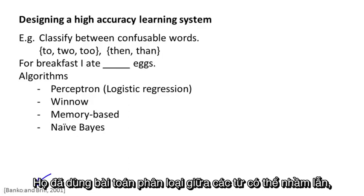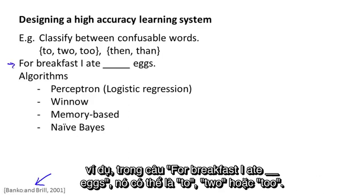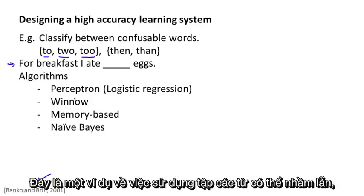They were considering the problem of classifying between confusable words. So for example, in the sentence 'for breakfast I ate', should it be T-O, T-W-O, or T-O-O? Well, for this example, for breakfast I ate T-W-O two eggs.